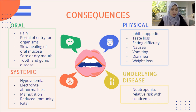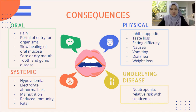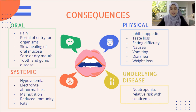The third consequence is physical, where the patient experiences taste loss that inhibits appetite, indirectly causing eating difficulty. The patient may also have nausea, vomiting, diarrhea, and weight loss. The last scope is underlying disease, meaning mucositis can worsen existing conditions. If the patient has mucositis with neutropenia, it will increase the chances of developing septicemia.